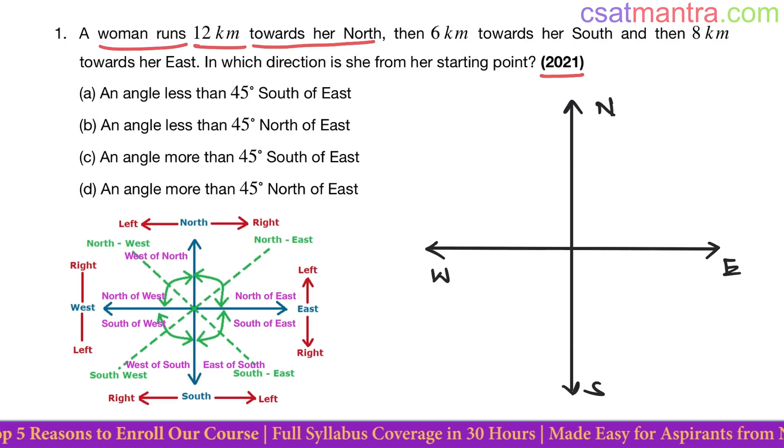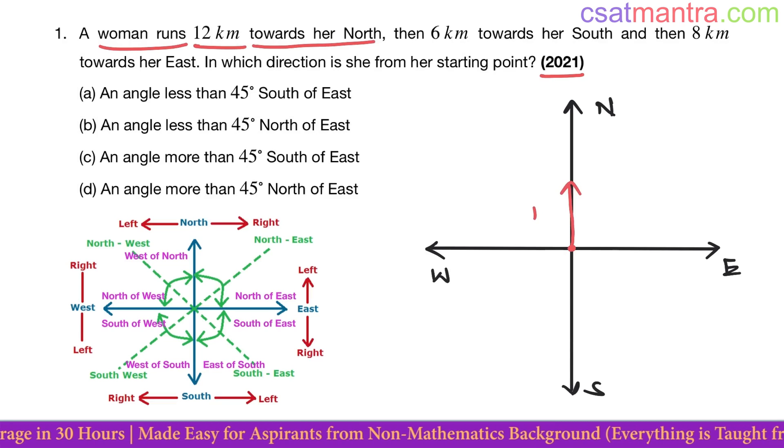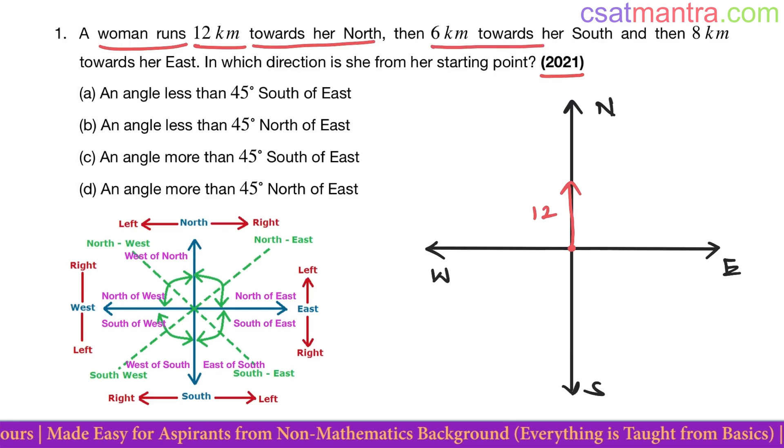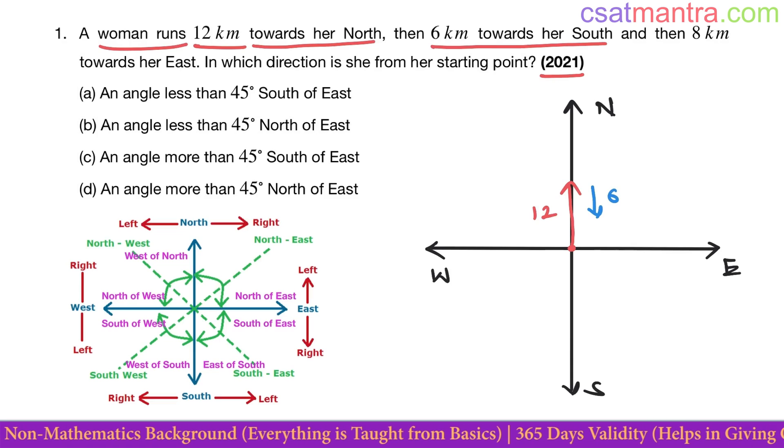towards her north. In directions problems, we have to always start from the center origin. So this is the starting point: 12 kilometers towards north, then 6 kilometers towards her south.